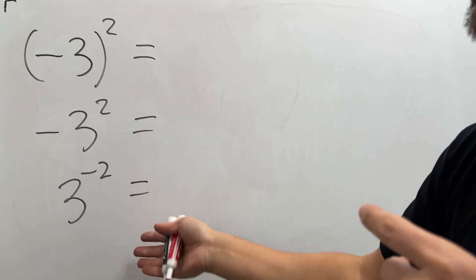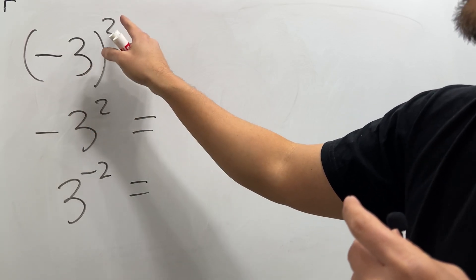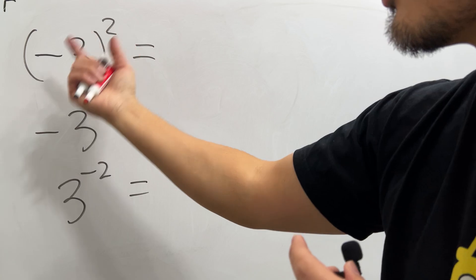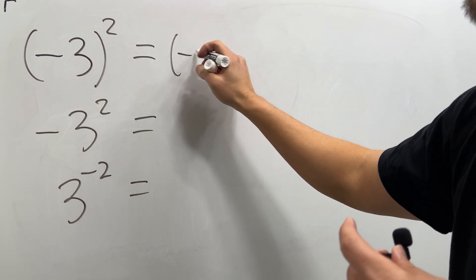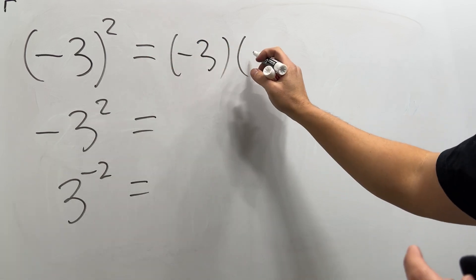All right, you definitely have to know this kind of exponent questions. First one: parentheses with negative three inside and then raised to a second power. Check this out. The second part tells you write this down twice, so we will have negative three. Remember, the inside. It's negative three and then multiply one more time, so negative three.